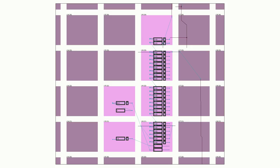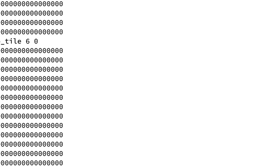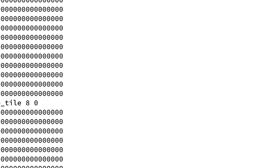Once packing is complete, the tool proceeds to place and route. This process iteratively figures out the optimal arrangement of logic tiles to minimize layout complexity, and then performs routing to determine the minimum wiring necessary to connect everything. Once complete, it outputs an ASC file, which is an ASCII description of the FPGA configuration.